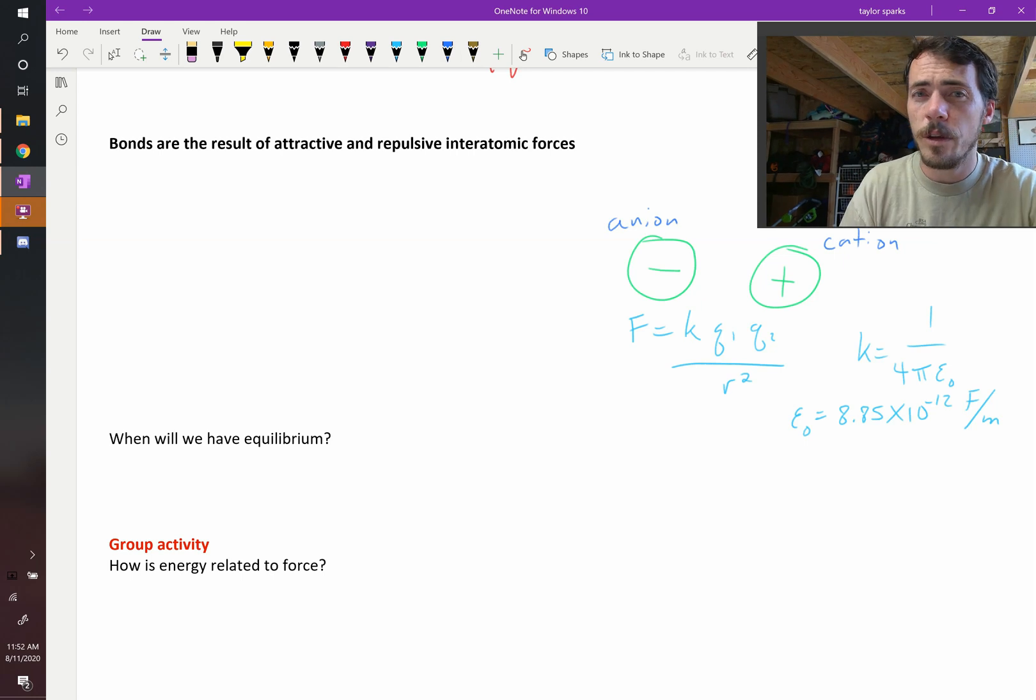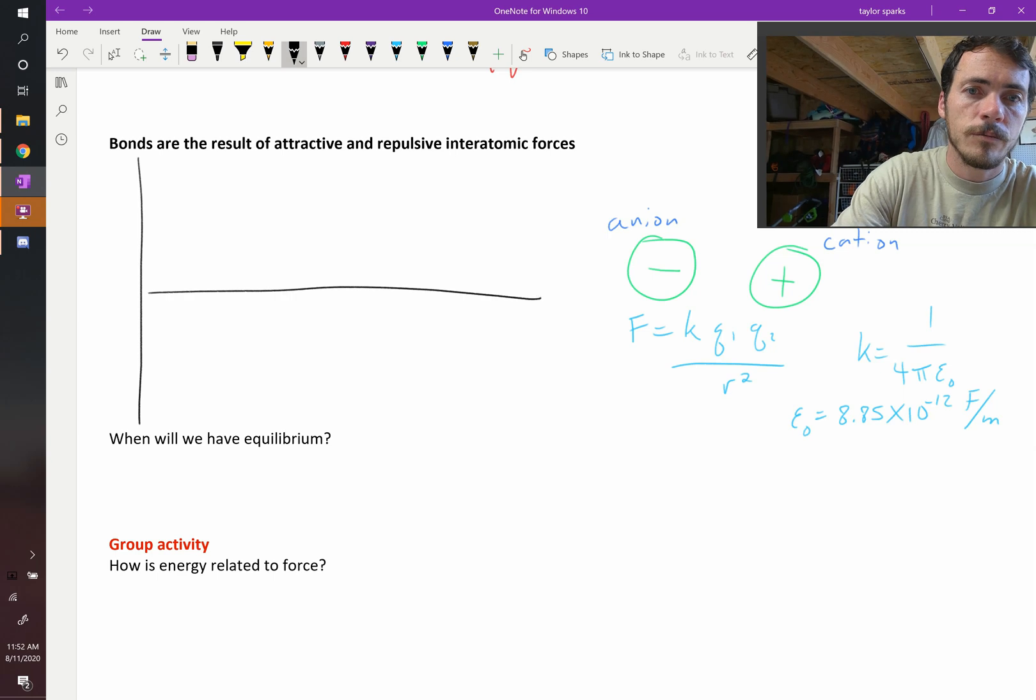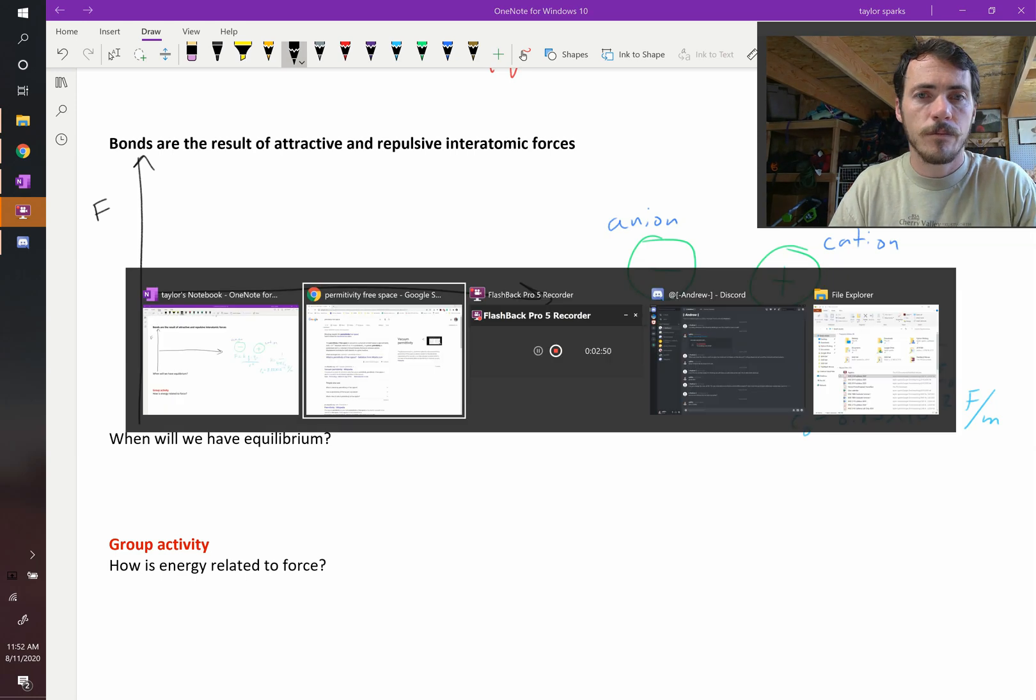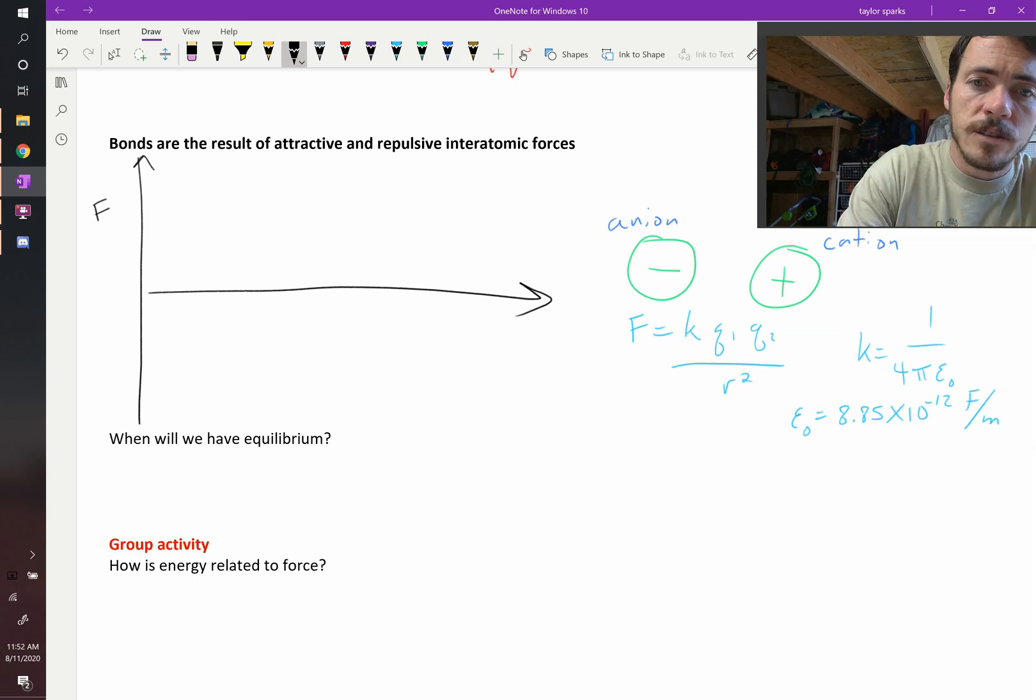So if we were to plot this, let's go ahead and plot it. We're going to plot here—our y-axis is going to be the force that this is experiencing. The y-axis is the force that these two atoms experience one to another, and the x-axis is going to be the separation distance r, the interatomic separation.